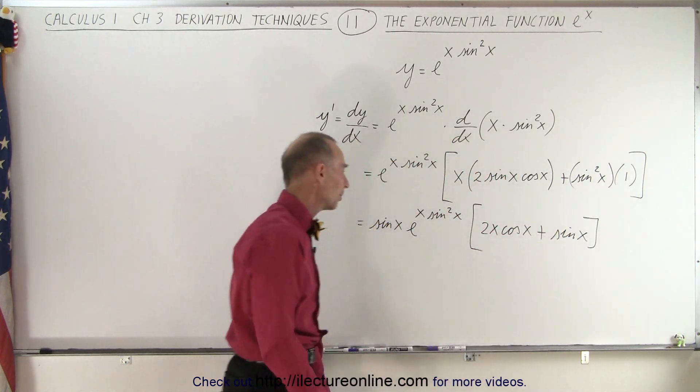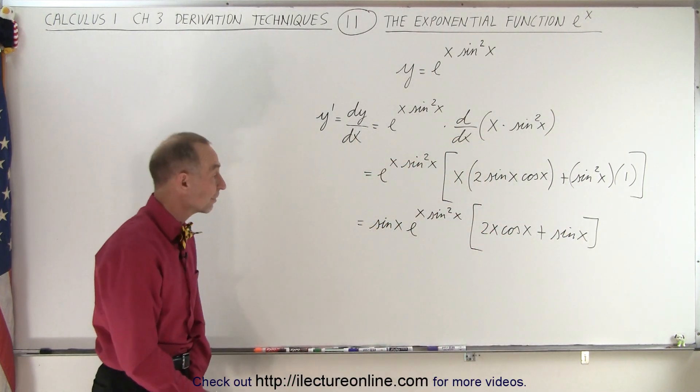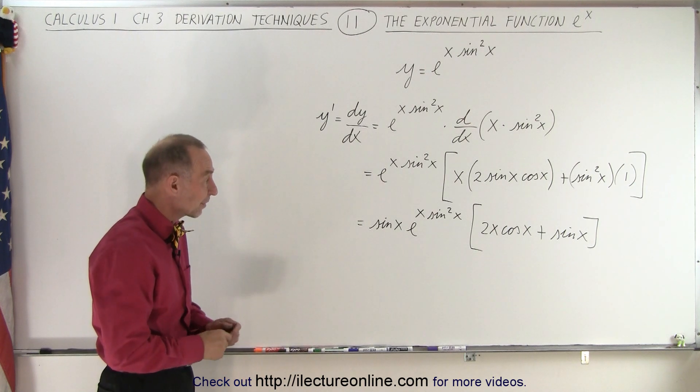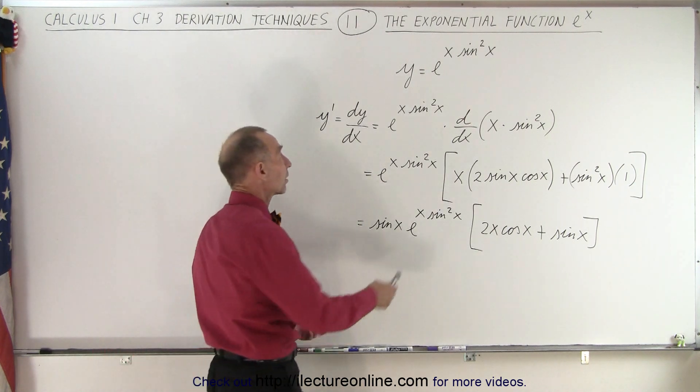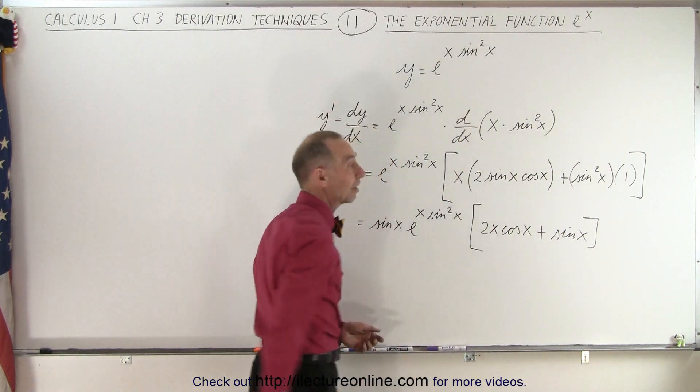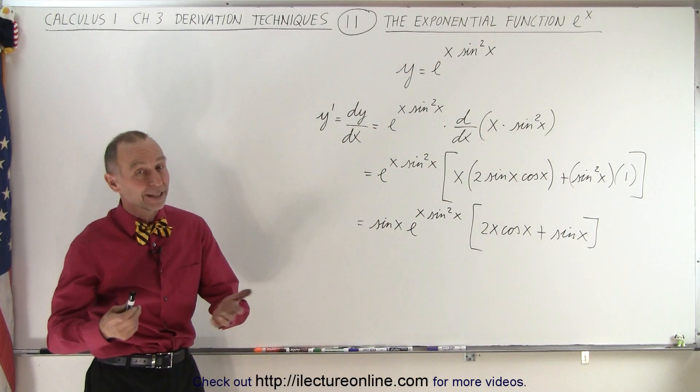And so I would say that that's probably the most simple form in which we can leave it. So that is how we find the derivative of an exponential function, where the exponent is, well, in this case, a product. And that is how it's done.